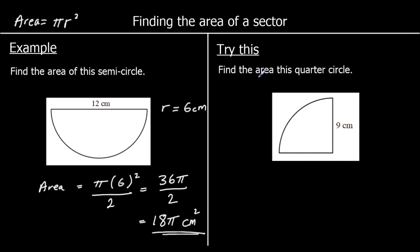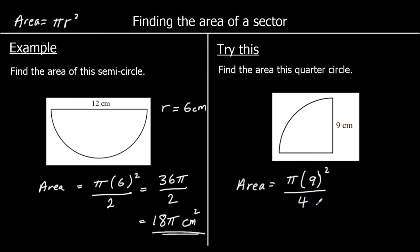One for you to try. This time we've got a quarter circle, so we're finding the area of a quarter circle. The area of a circle is pi times the radius squared, so it's going to be pi times 9 squared. And it's a quarter circle, so we're going to divide by 4 this time — we've got a quarter of the whole circle.